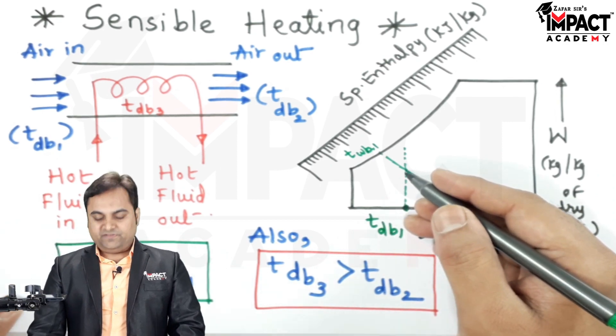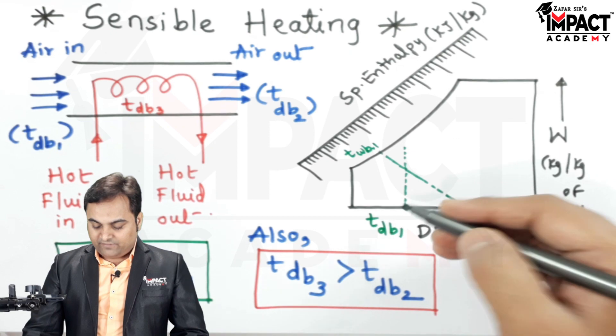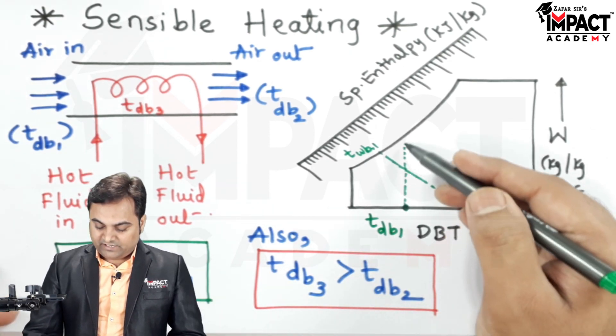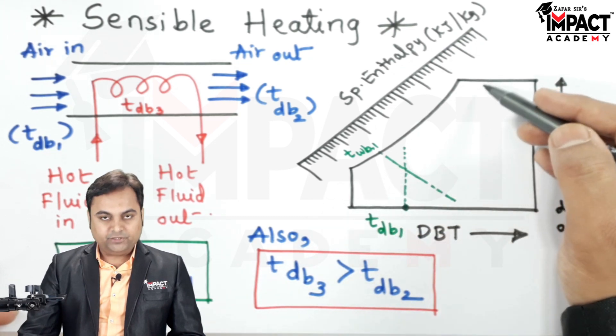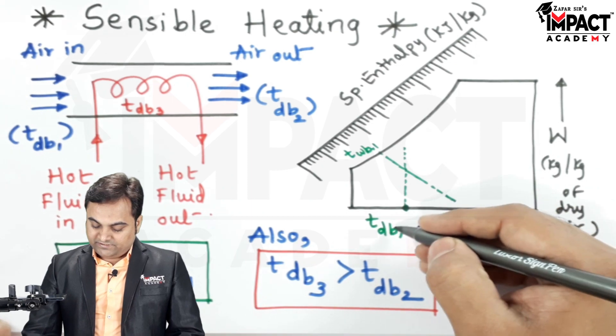Because in order to have the intersection we should have at least two lines, or even, for example here, I am having dry bulb temperature and wet bulb temperature. We can even have the dry bulb temperature and the relative humidity of the air so that we get the intersection point. So by the dry bulb and wet bulb temperature, here I am getting point number 1.